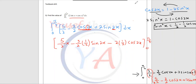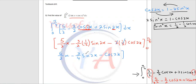So this part will be: 5 over 2 x, with no simplification. And then minus 3 over 4 sine 2x. The 2 and the reciprocal half cancel each other, leaving minus cosine 2x. All evaluated between 0 and π/4.